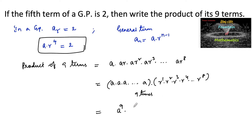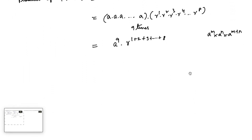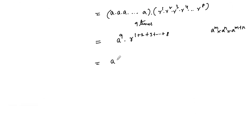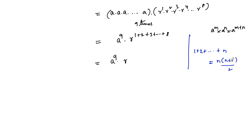We can write this as a to the power 9 into r to the power of the sum of exponents. Since a^m into a^n equals a^(m+n), r to the power 1 into r to the power 2 and so on up to r to the power 8 equals r to the power of 1 plus 2 plus 3 and so on up to 8. The sum of the first n natural numbers is n(n+1)/2.